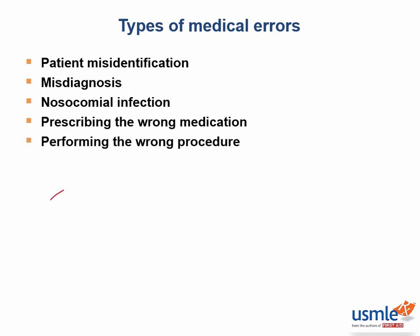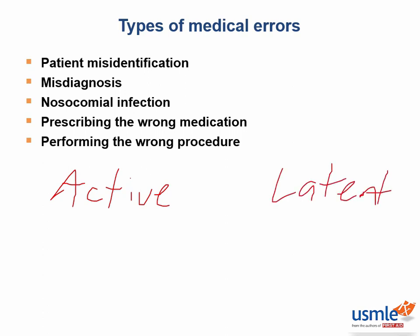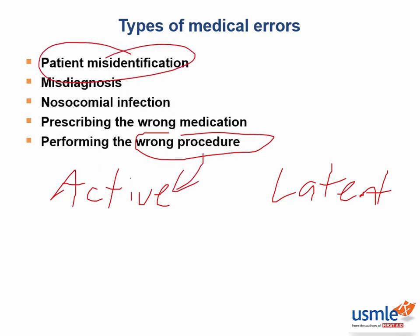Errors can either be active or latent. Active errors occur due to mistakes that the physician makes directly. It has an immediate impact, so something like performing the wrong procedure or patient misidentification would fall under active medical errors.